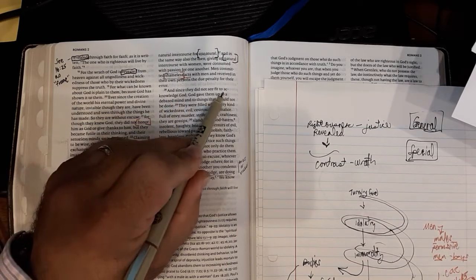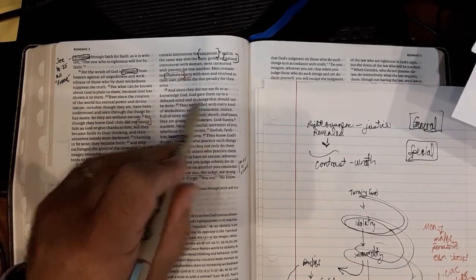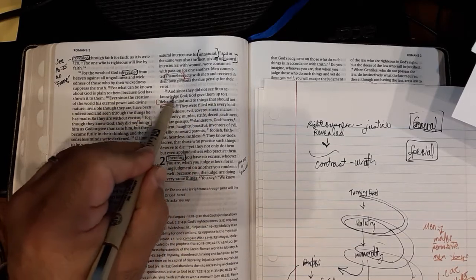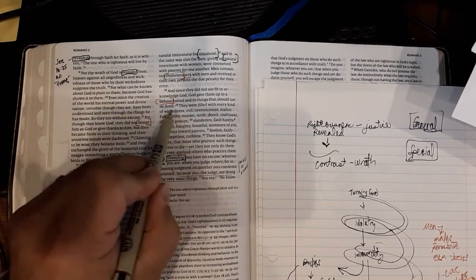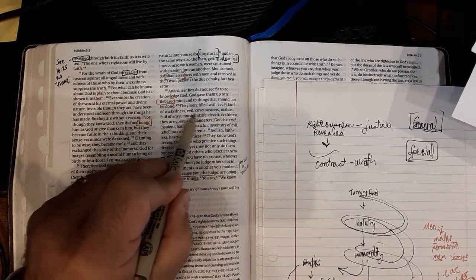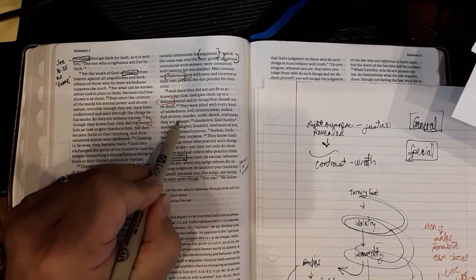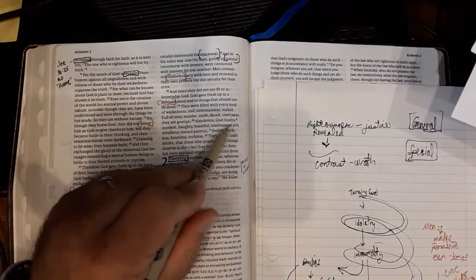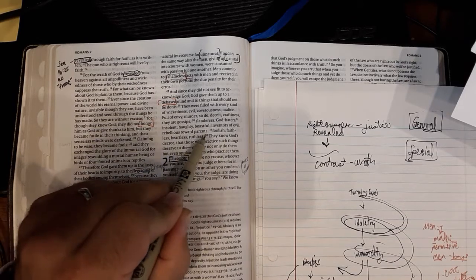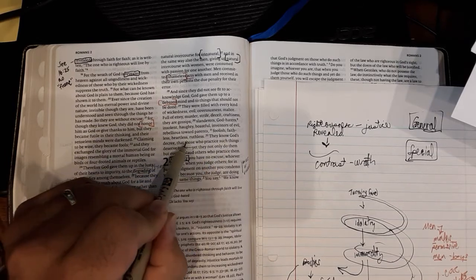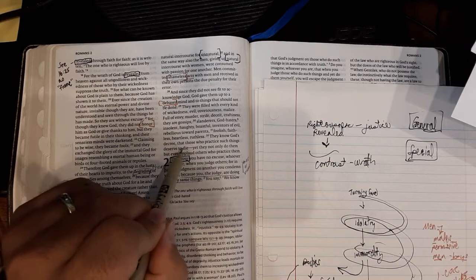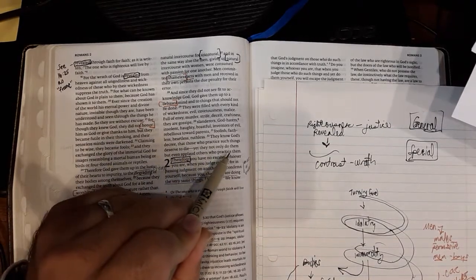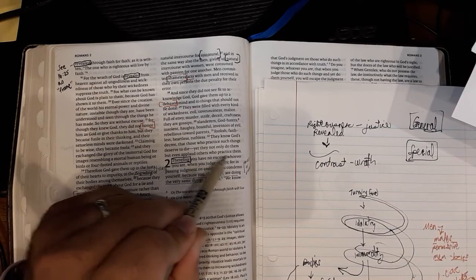And since they did not see fit to acknowledge God, God gave them up. There's that third time to a shamed mind. That's the word debased and another word of honor and shame to things that should not be done. They were filled with every kind of wickedness, evil, covetousness, malice, full of envy, murder, strife, deceit, craftiness. They're gossips, slanderers, God haters, insolent, haughty, boastful inventors of evil, rebellious towards parents, foolish, faithless, heartless, ruthless. They know God's decree that those who practice such things deserve to die. Yet they not only do them, but they even applaud others who practice them.